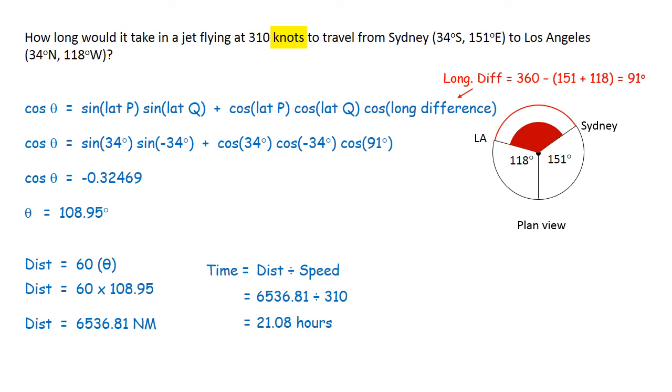When you get your answer convert the decimal hours into hours and minutes. You can do this by writing down the full number of hours, that's 21 hours. Then you get the remaining decimal part and multiply it by 60. 60 times 0.08 equals 5 minutes.